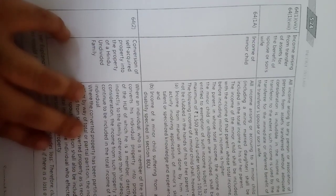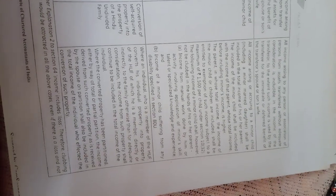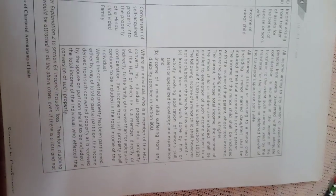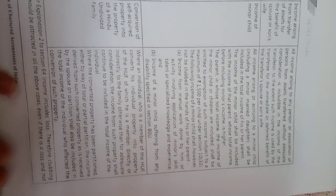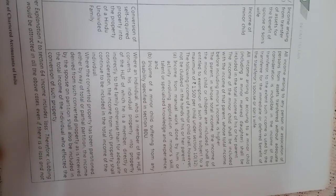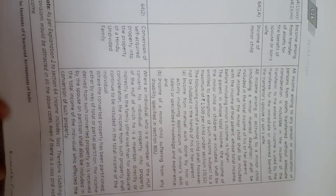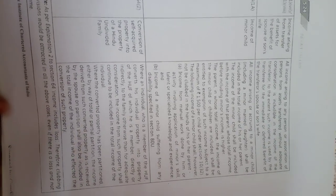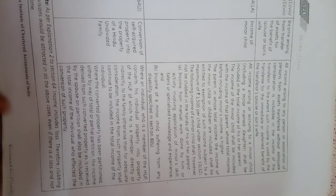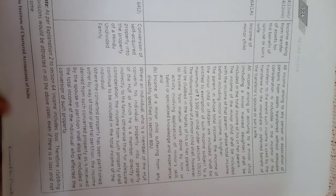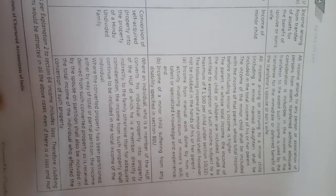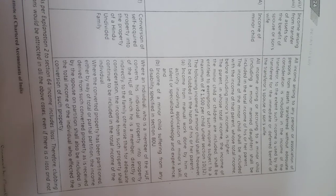According to Section 64(1A) — income of minor child — whatever income is arising to the minor child will be clubbed with the income of his or her parents. For every minor child there will be a deduction of ₹1,500 per child. The rule is that if the father's income is greater, then it will be clubbed with the father's income, otherwise with the mother's income.